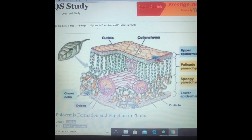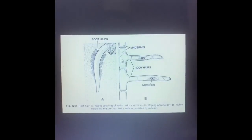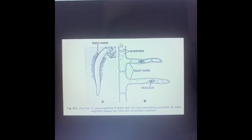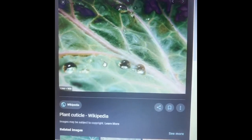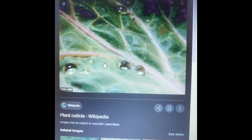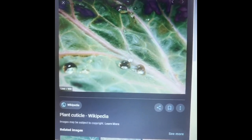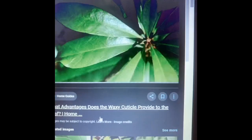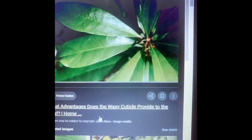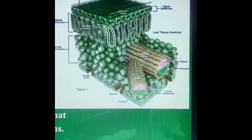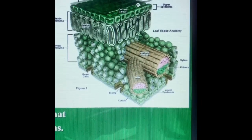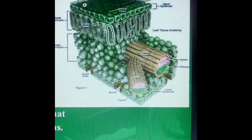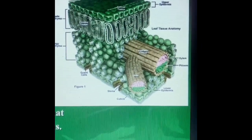In the roots, epidermal cells are modified into root hairs. Here you can see an enlarged portion of the epidermal cells of the root where the epidermal cells have become root hairs. Because of the waxy cuticle above the epidermis, water does not get absorbed on the leaves — you will find leaves shiny because of the presence of the cuticle. This is again a three-dimensional structure of the leaf, and you can see the thick cuticle represented as a sheath. This waxy cuticle reduces transpiration or excess loss of water.